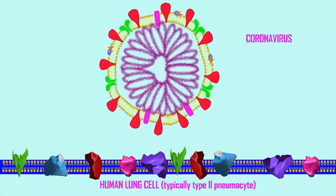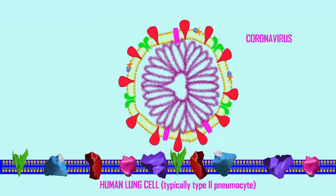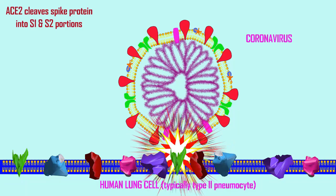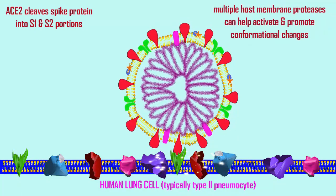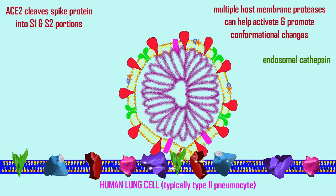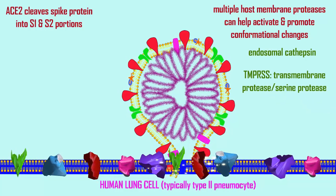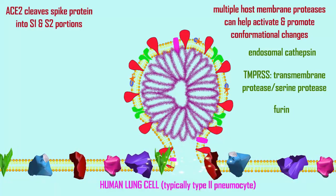In addition to the ACE2 protein on human cells, which serves as a receptor for the coronavirus, there are a number of other proteins which are required or facilitate the coronavirus infection, because many of the proteins of the virus have to be broken by peptidases or proteases which cut an amino acid chain.